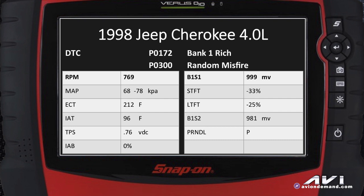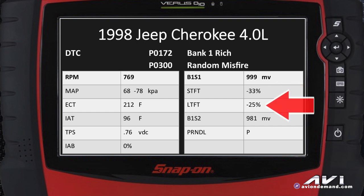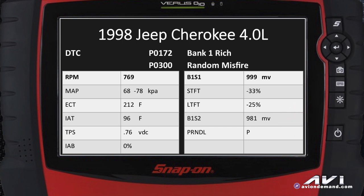The oxygen sensors pegged way out at 999 millivolts, and with the oxygen sensor screaming rich, the fuel trims are way negative — negative 33 percent on the short-term fuel trim and the long-term at negative 25. The rear O2 sensor behind the cat was at 981 millivolts. We were in park.